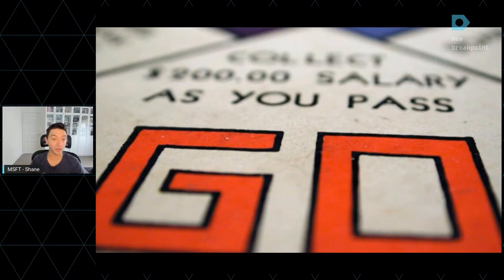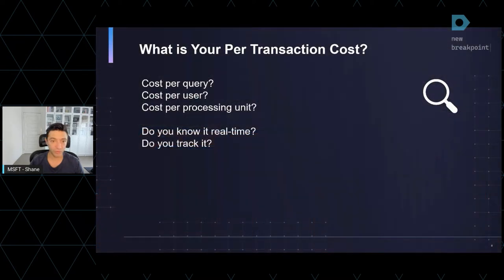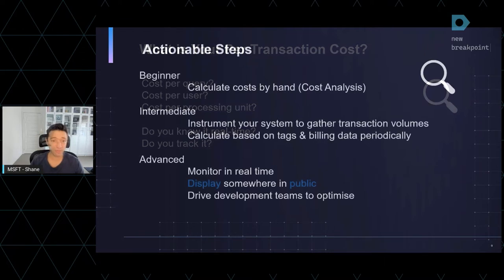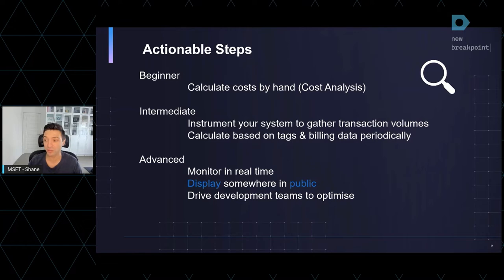I'm only going to spend five minutes talking over the basics before we dive deeper. Do not pass go, do not collect $200. Who knows what their per-transaction cost is for their application? Do you know what the cost per hour to operate the systems you're responsible for? Who tracks it in real time? You can't improve what you can't measure, full stop. You need to calculate your per-transaction costs. From a beginner level, simply do it by hand — sit down with the Azure Cost Analysis tool, figure out your transaction rates, do some rough calculations, and either be pleasantly surprised or really shocked.